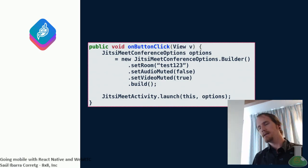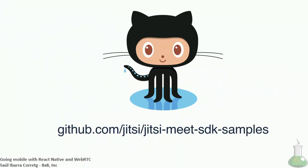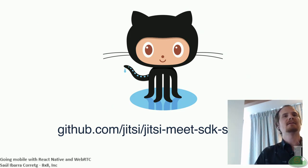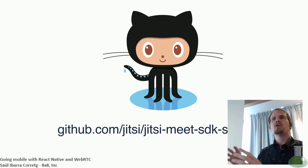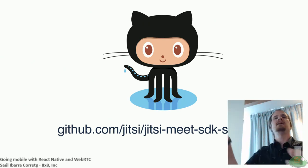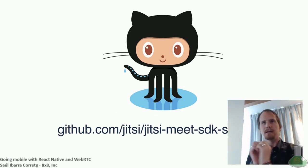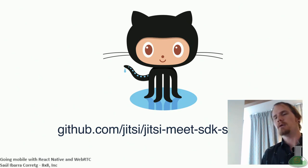In order to help people get on board, we recently published a few SDK examples. In this repository you can find examples — one written in Java for Android, one written in Swift for iOS, and another for iOS written in Objective-C. It's just an example of the most basic integration: a button, a text field where you can write what room you want to join, and when you click join the Jitsi Meet SDK is used to join that room.